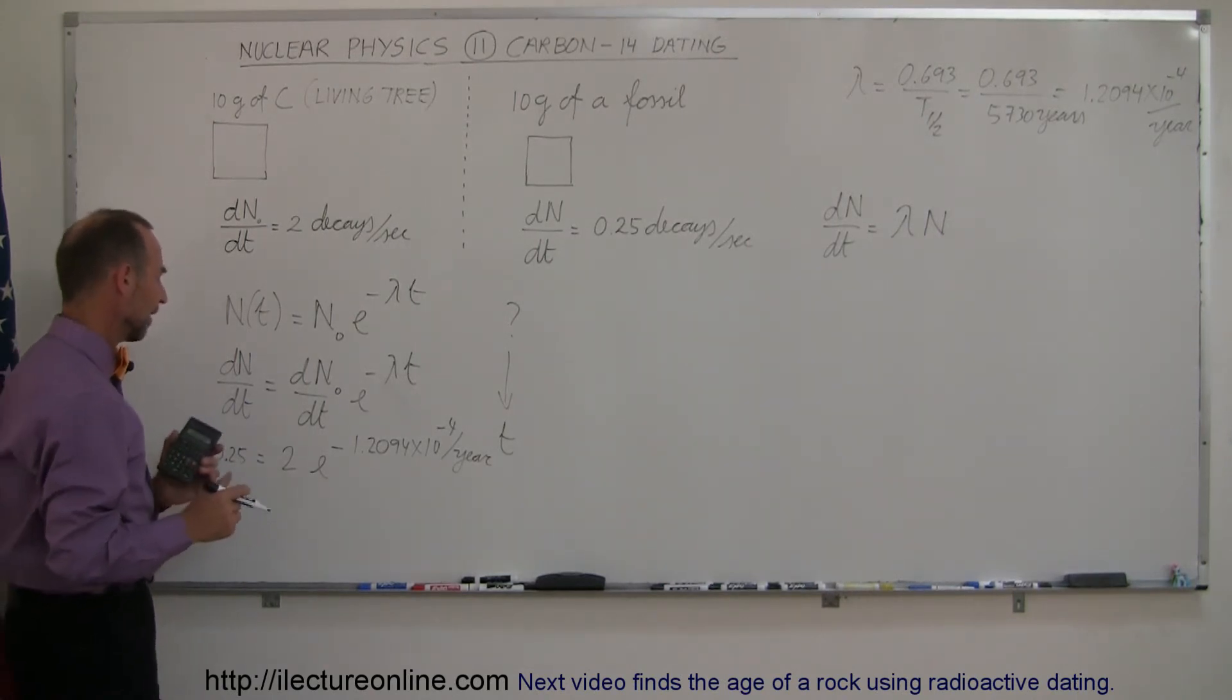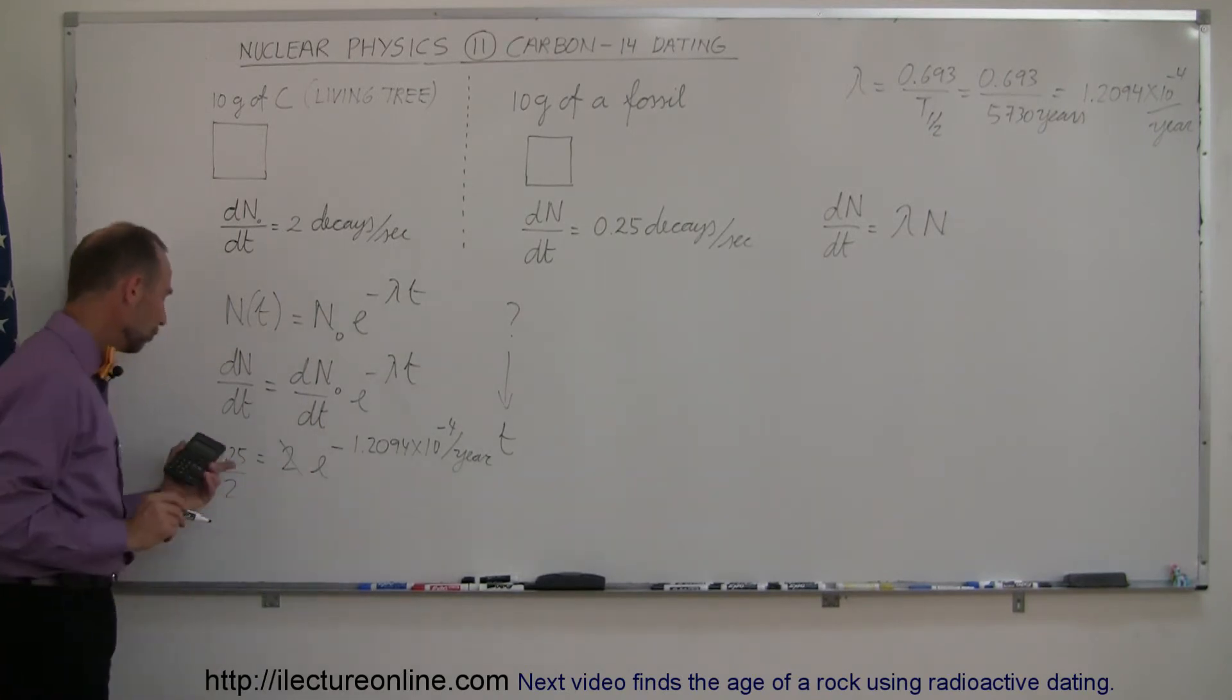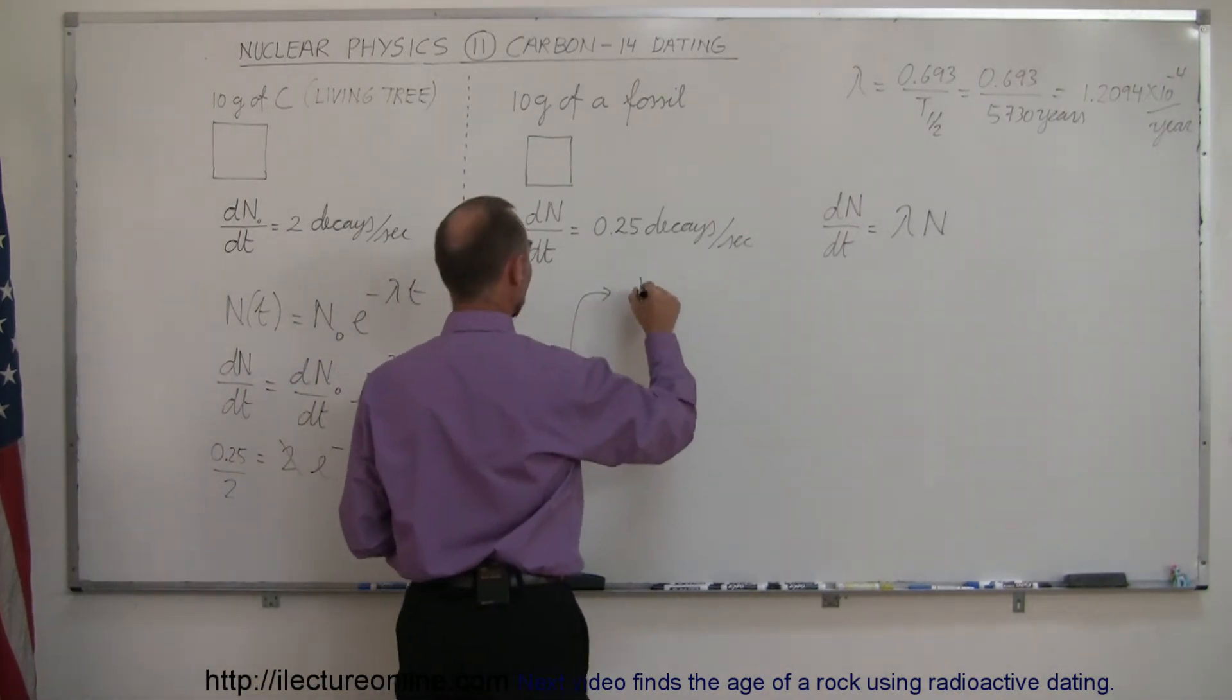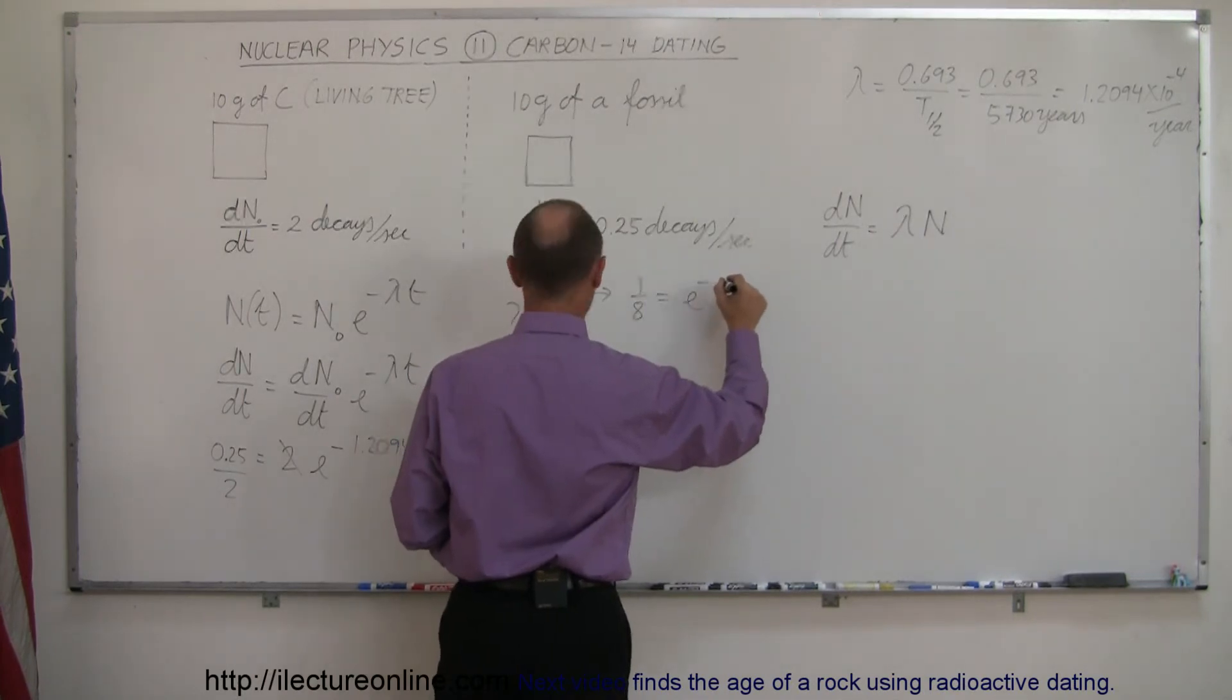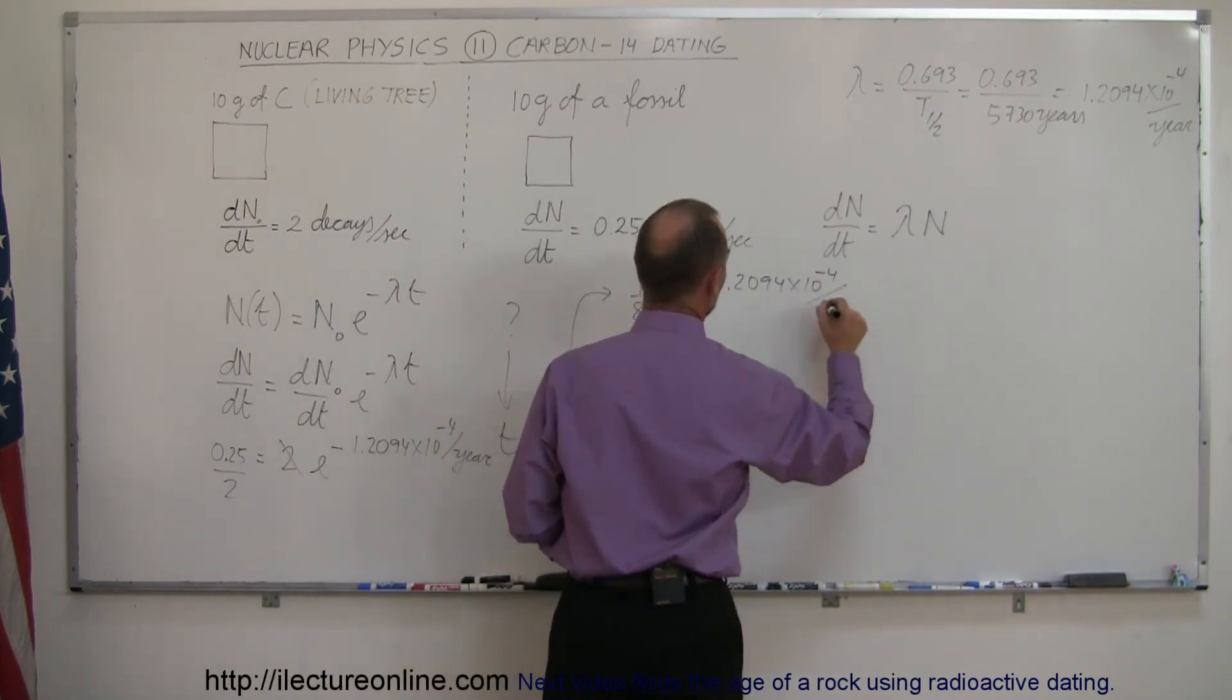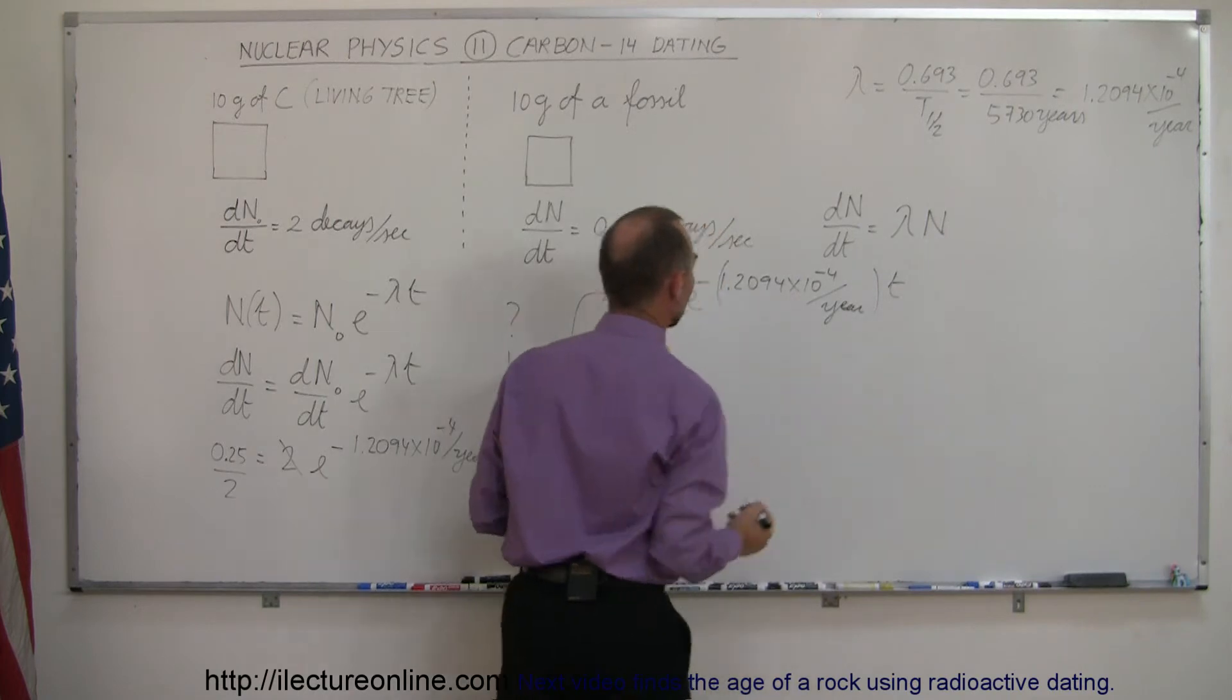Well, first what we're going to do is divide both sides by 2. And 0.25 divided by 2 is the same as 1/8, because 0.25 goes into 1 four times, so it goes into 2 eight times. So I can say that 1/8 is equal to e to the minus 1.2094 times 10 to the minus 4 per year times t.